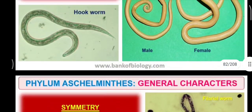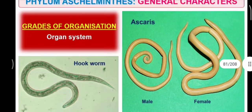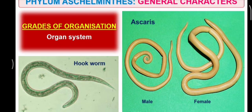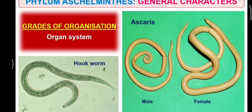Here you can see the male worms and female worms and how they differ. In male worms, the posterior part is hooked and highly curved. Whereas in the female, the posterior end is not curved. Moreover, the female is larger than the male, as we can see in the picture.